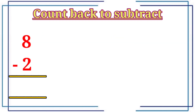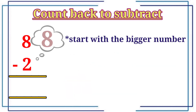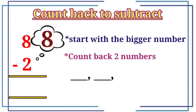To find the answer, eight minus two. Remember, when you count back, you start with the bigger number. We will start with the bigger number, eight. Let's count back two numbers: seven, six. Eight minus two is equal to six.